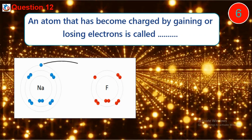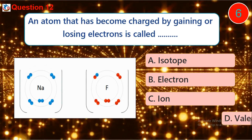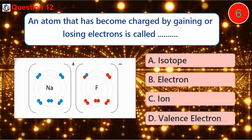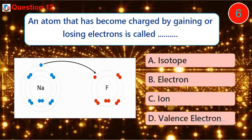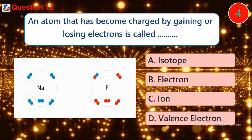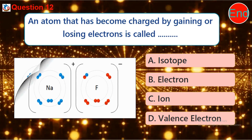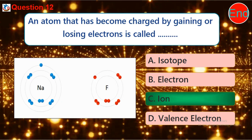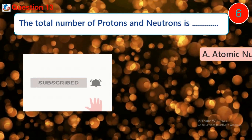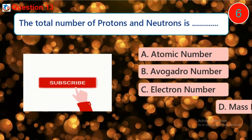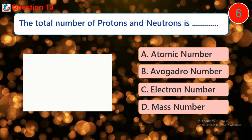Question 12: An atom that has become charged by gaining or losing electrons is called dash. A) Isotope, B) Electron, C) Ion, D) Valence electron. Question 13: The total number of protons and neutrons is dash. A) Atomic number, B) Avogadro number, C) Electron number, D) Mass number.